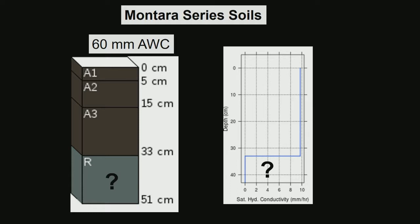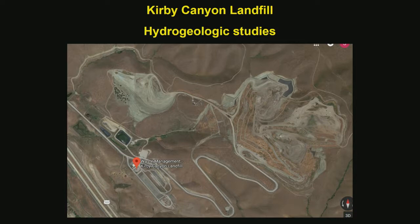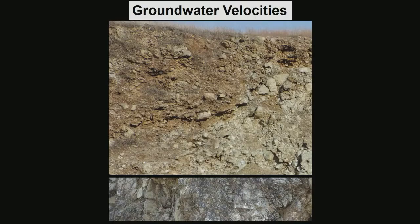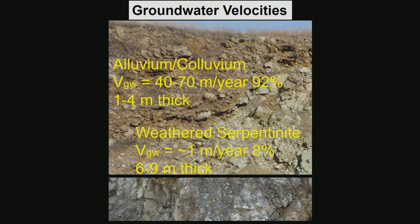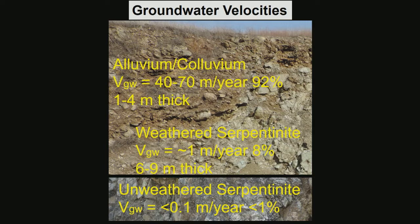Once we get above 60 mm of rain, accounting for ET, we're at the point where we can start leaching all that accumulated nitrate. The soil scientists stop when they hit rock, so we need to know what's going on in the rock. The Kirby Canyon landfill excavated an entire canyon and we had extensive hydrogeologic studies from them. They published groundwater velocities: in the colluvium layer one to four meters thick, water flows between 40 and 70 meters per year, with about 92 percent of the water flowing through that layer.